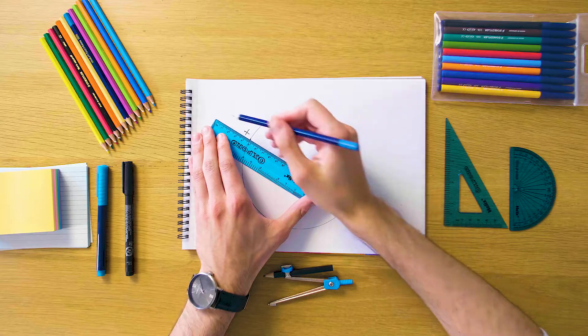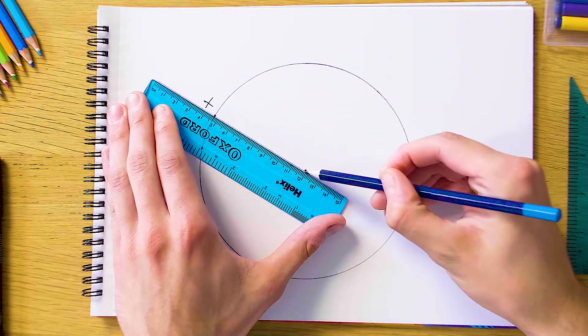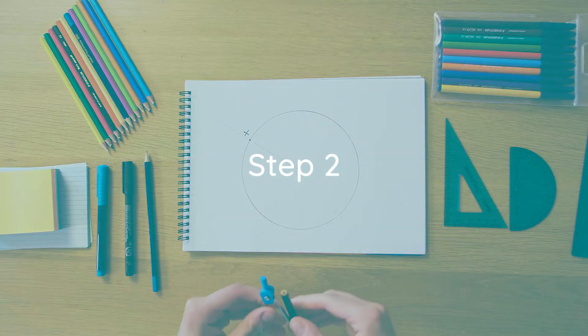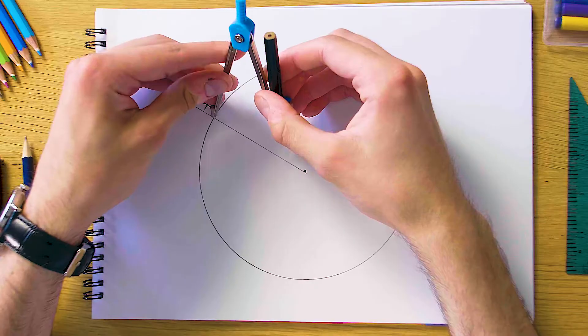So that's our first construction line here. And now the second step is actually just going to be to find a line that's perpendicular to this line which passes through X. So to do that,